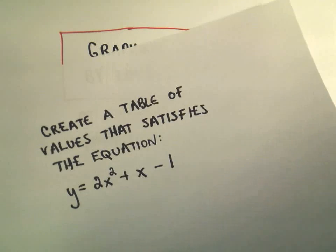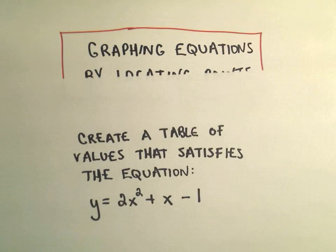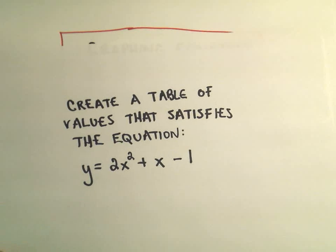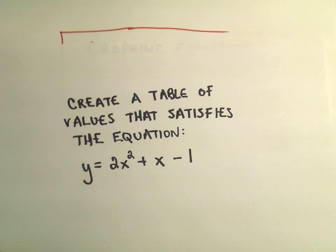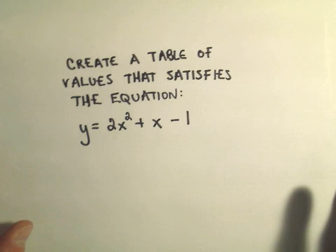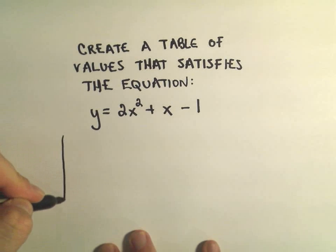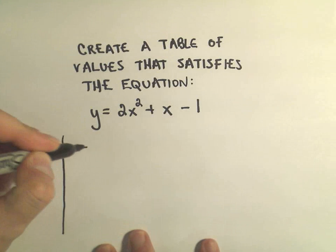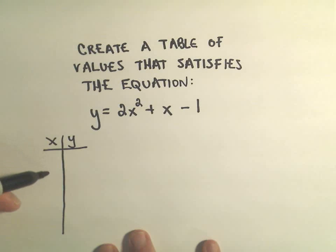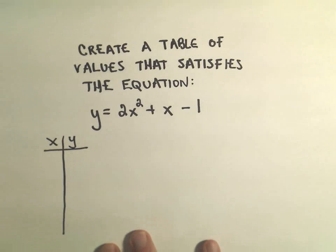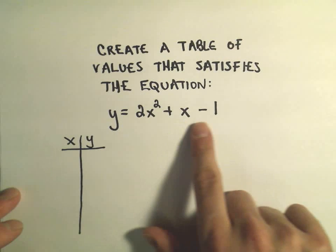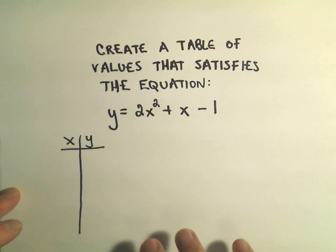So to get started, we're going to create a table of values that satisfies the equation 2x squared plus x minus 1. Just to create a table of values, sometimes people will call this a t-chart, but the idea is I'm going to pick different values for x, plug those in and do the arithmetic, and then I'll get corresponding values for y.